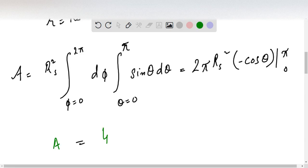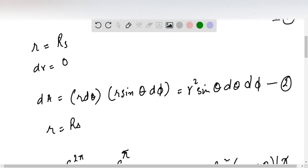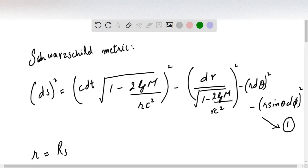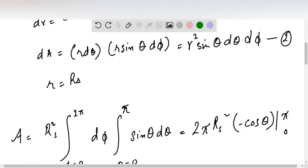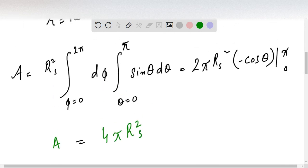A is equal to 4 pi Rs square. So guys, this was the explanation of this question. I hope you have understood all the parts thoroughly and it was easy for you to understand. Thank you very much.